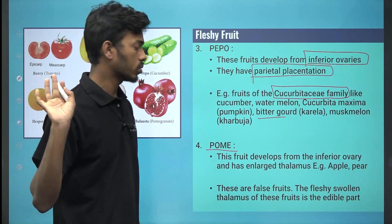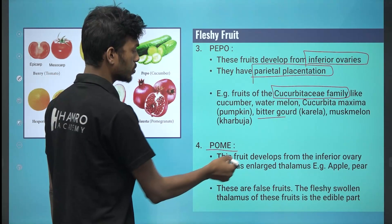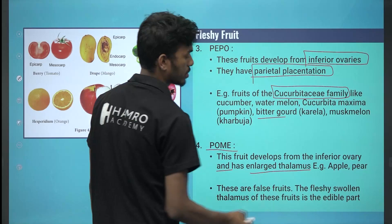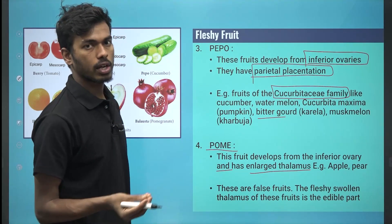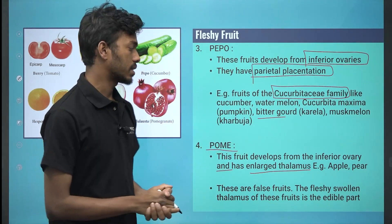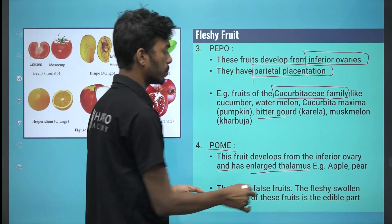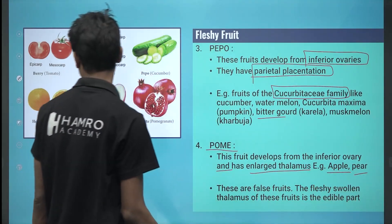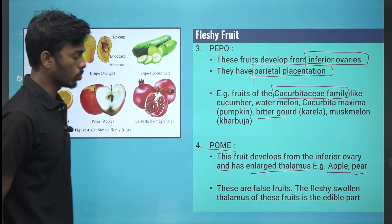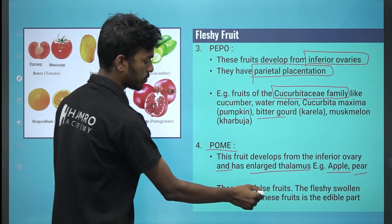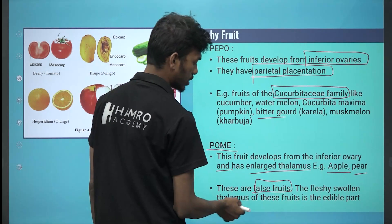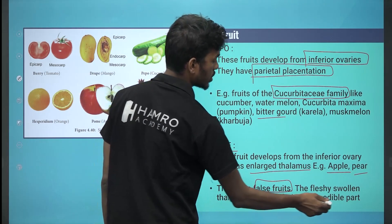The pome fruit develops from the inferior ovary. If we have the fruit from the inferior ovary, examples are apple or pear. What is the pome? These are false fruits. The thalamus is swollen.